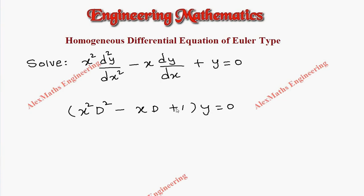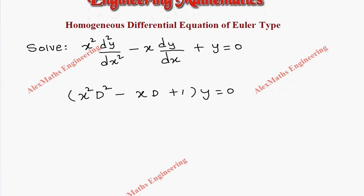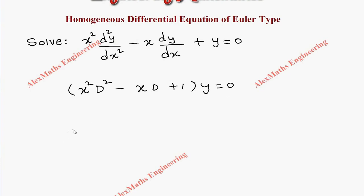This is a homogeneous differential equation with variable coefficients. Here we take x = e^z, or from this the value of z is log x. Now x·D is nothing but D' (D dash).